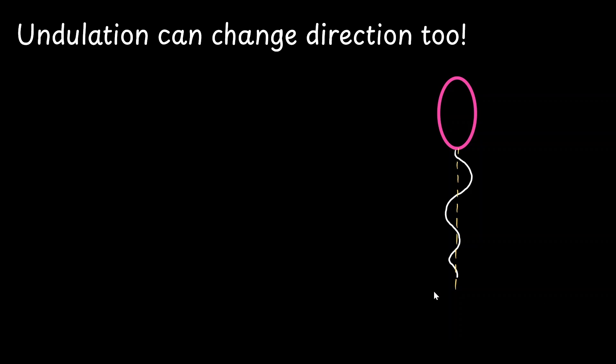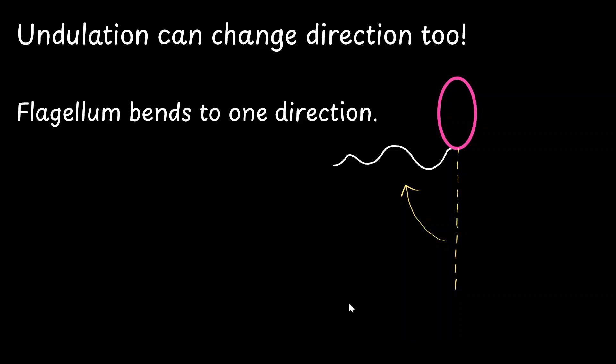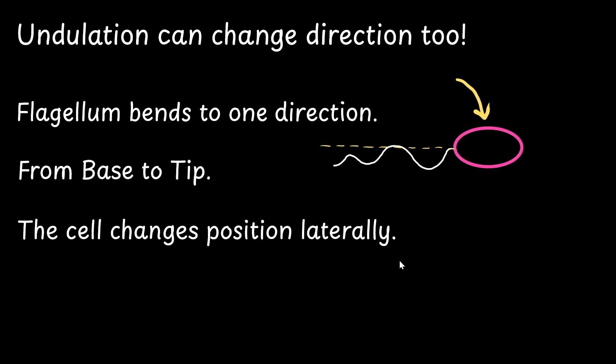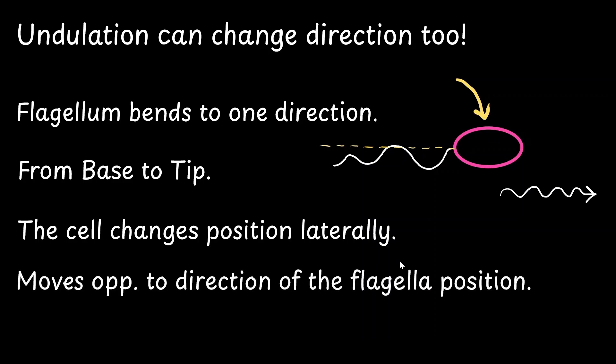So let's say an organism is moving in this direction initially. So now the flagella is going to bend in one direction. And let's imagine the waveform is going to be traveling from the base to the tip again. Corresponding to this change in the flagellar movement, the cell also changes position laterally. And it starts moving in the direction that is opposite to that of the flagellar position.